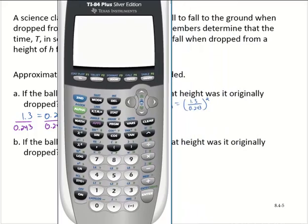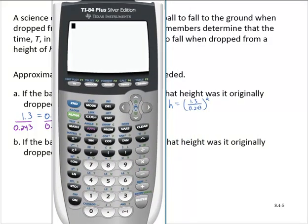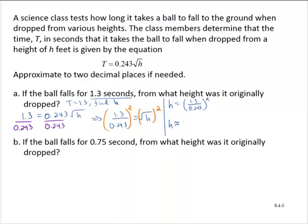Let me move this over so we can see better. I need quantities. So open quantity 1.3 over 0.243. Close that off, and then raise that to the second power, and that gives me 28.62 to two decimal places. So h is approximately 28.62.